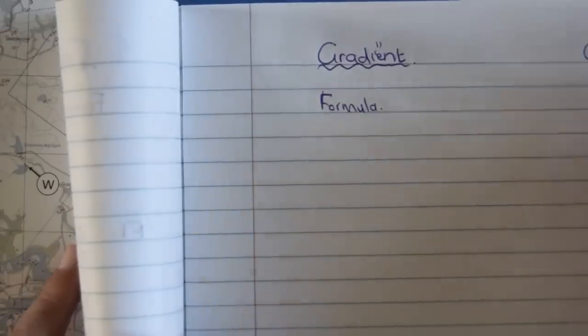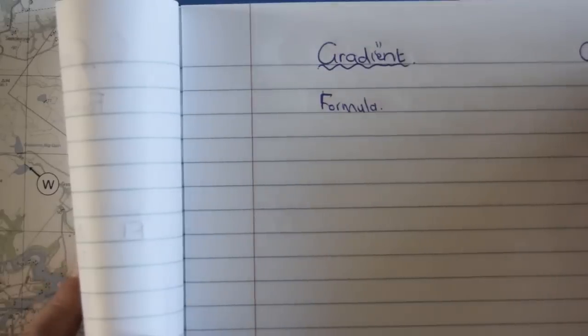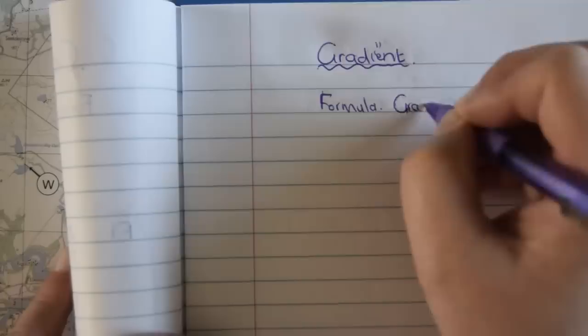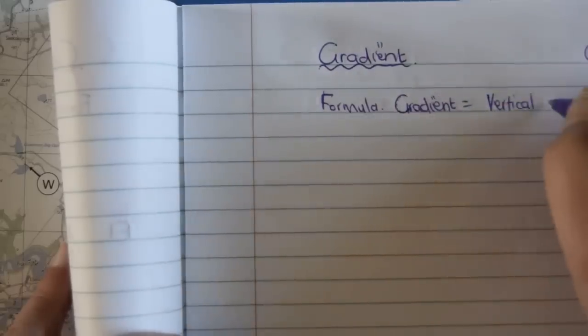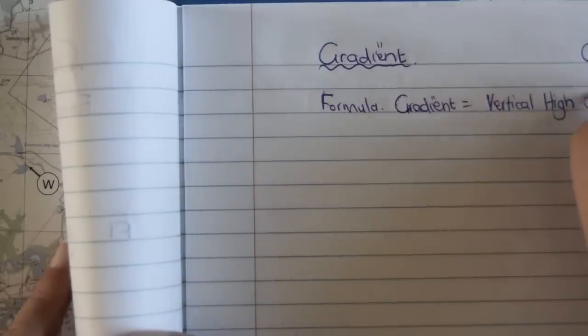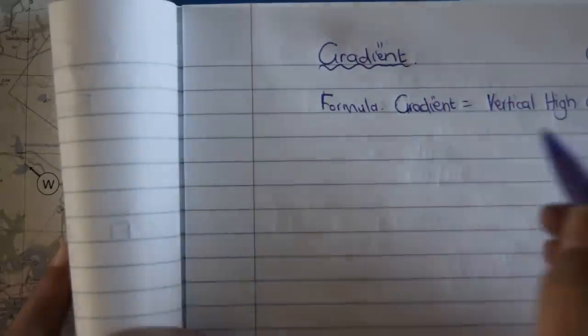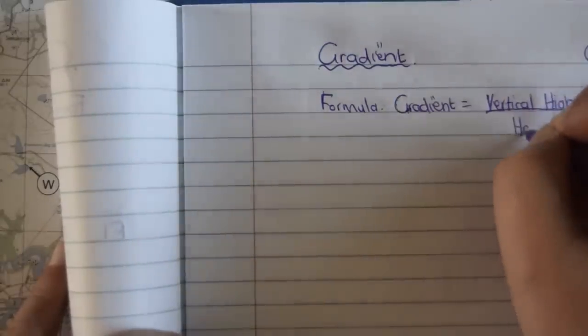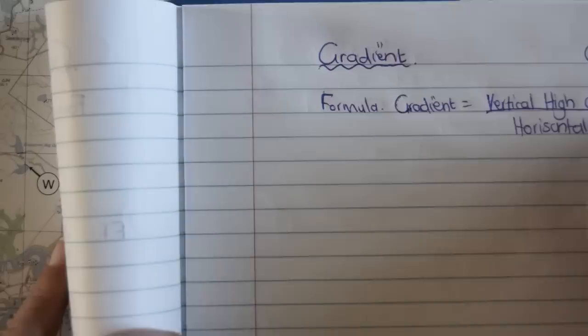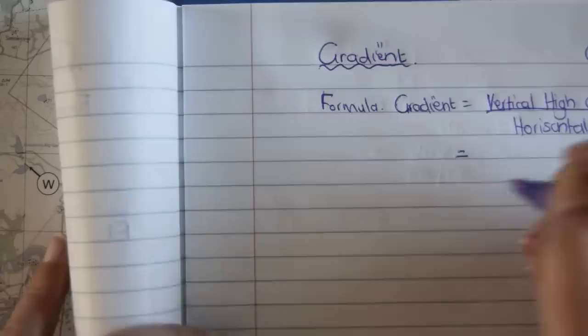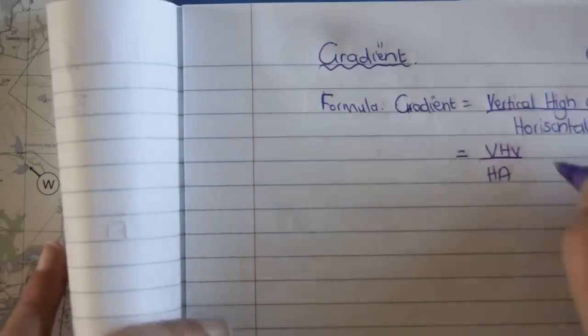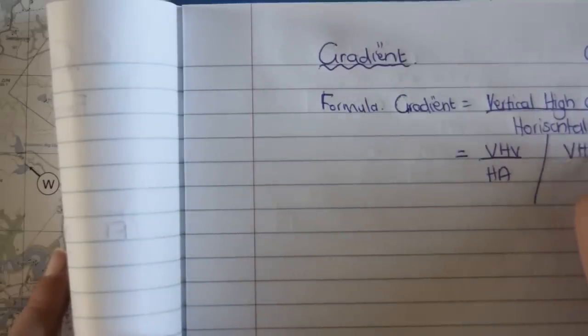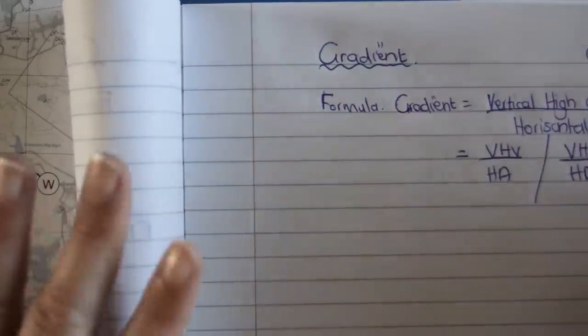What you also need to know is the gradient. What does it actually stand for? It means the top part of the gradient will tell you how high you are going, and the bottom part will tell you how far you are going. The formula for gradient is your vertical height difference. They call it other words in the textbooks. It means exactly the same. Divided by the horizontal distance.